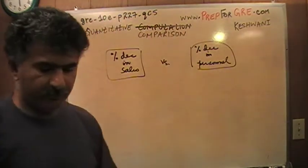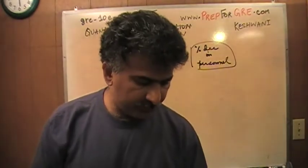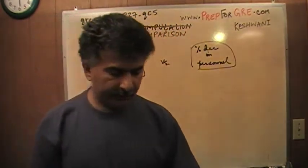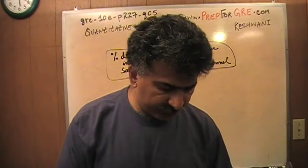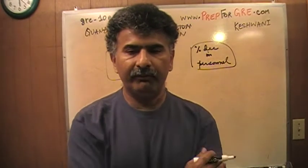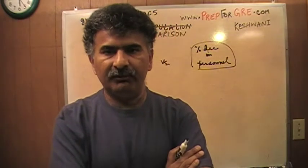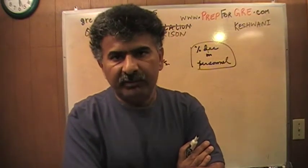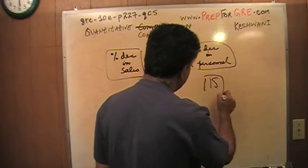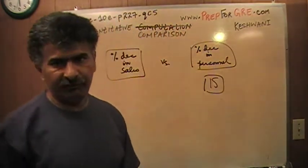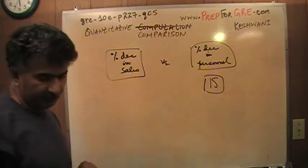Percentage decrease in the personnel is very straightforward because we were just told that decrease in the number of sales personnel in company K to 85%. Well, if it decreases to 85% of the original level, the decrease must have been 15%. So that is very straightforward. This quantity, quantity in column B is just 15. Let's figure out what this is.